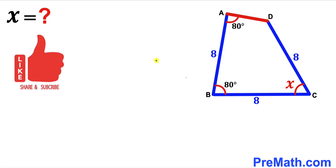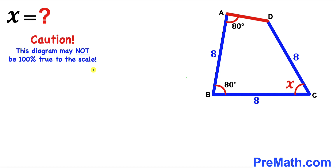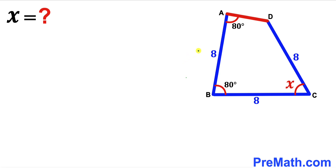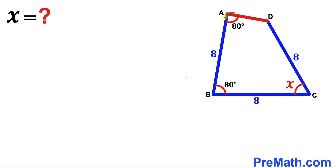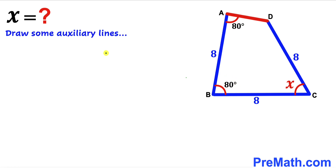Please don't forget to give a thumbs up and subscribe, and keep in mind that this figure may not be 100% true to scale. Let's get started. Focusing on quadrilateral ABCD, we can see our only two known interior angles are both 80 degrees. We are going to draw some auxiliary lines to simplify our work.